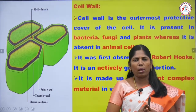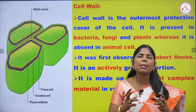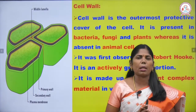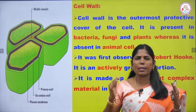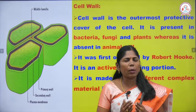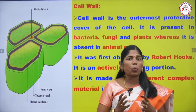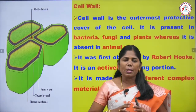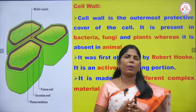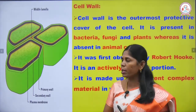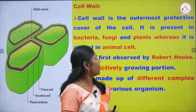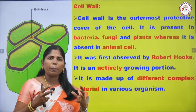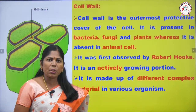What is the importance of the cell wall? The cell wall is very important for protecting the cell. Inside the cell we can see cytoplasmic inclusions. The cell wall is the outermost layer; next to the cell wall, the cell membrane is present. Next we can see the protoplasm, cytoplasm, and all the cell organelles embedded in the cytoplasm. The cell wall is the outermost protective cover of the cell, which is absent in animal cells.